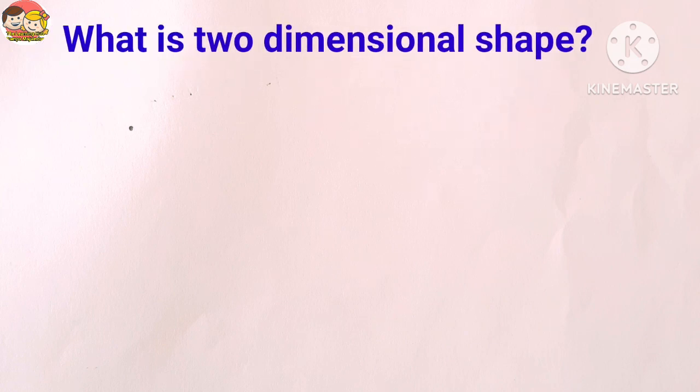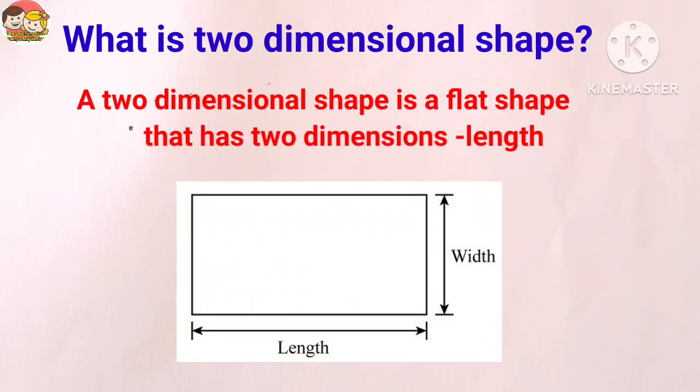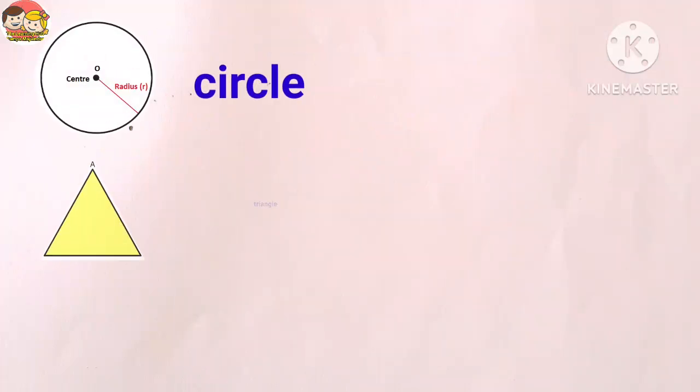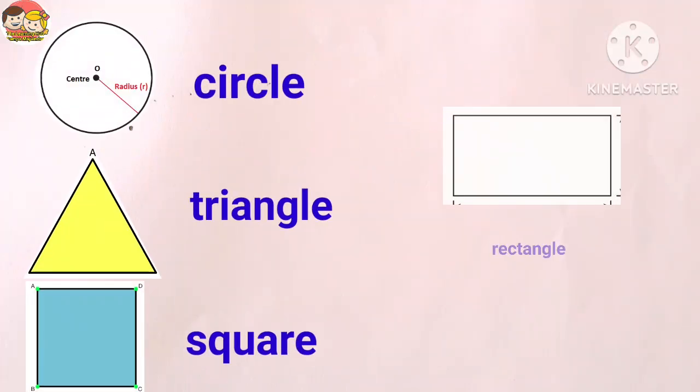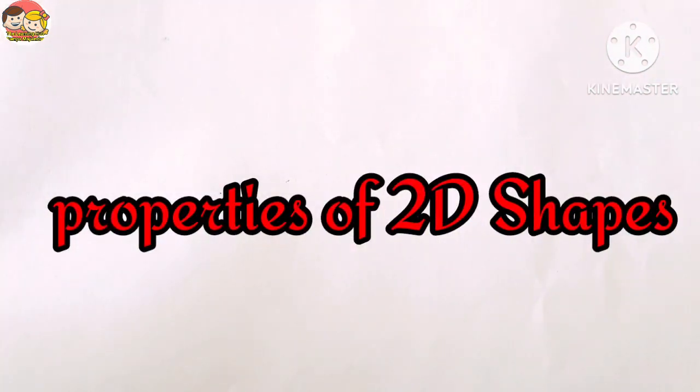In this video, we are going to learn about different types of two-dimensional shapes, meaning 2D shapes. What is a two-dimensional shape? A two-dimensional shape is a flat shape that has two dimensions: length and width. 2D shapes do not have any thickness or depth.